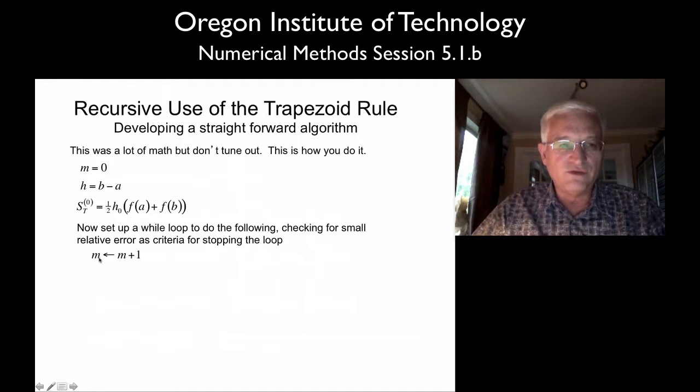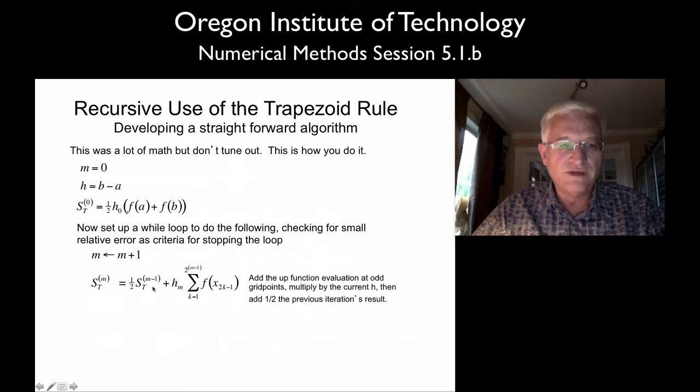So inside this loop, this is representing some sort of a while loop, we'll increment our recursion level, and we just simply apply the formula that we have. Now this is going to require looping of its own, of course, and adding up some accumulator and multiplying by the right width, which we'll calculate as we go.